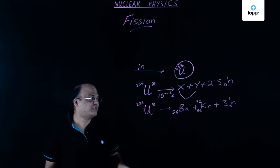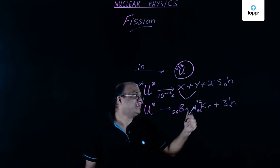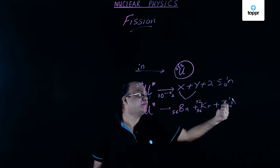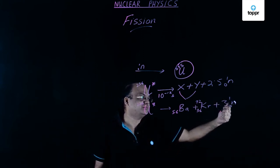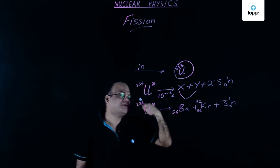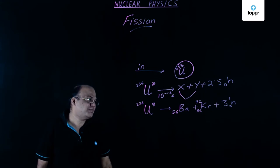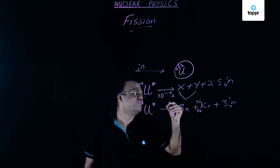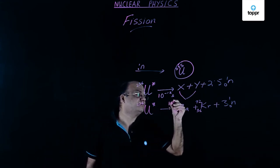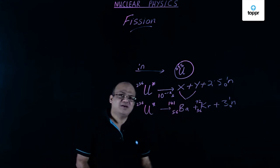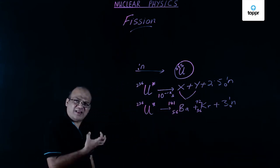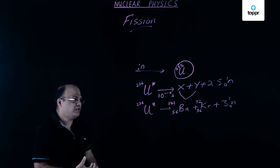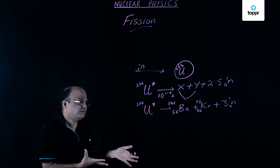What will be the mass number? Krypton contributes 95, so subtracting 95 from 236 minus 3 gives us 141 for barium. So this is an example of one specific fission reaction.